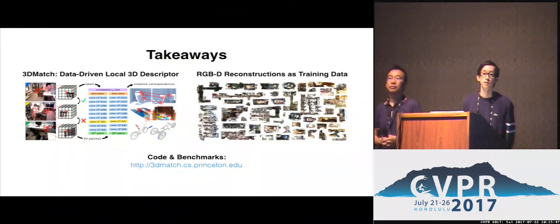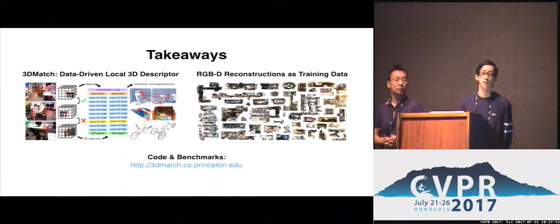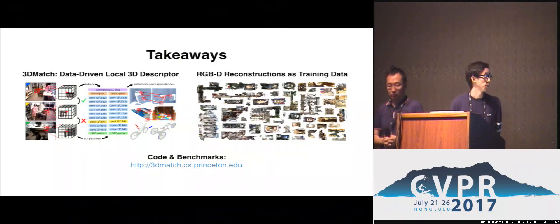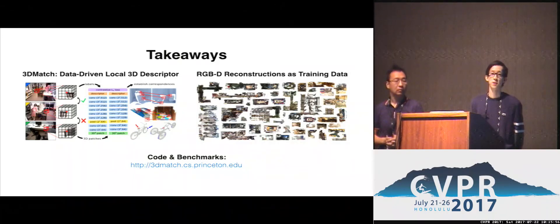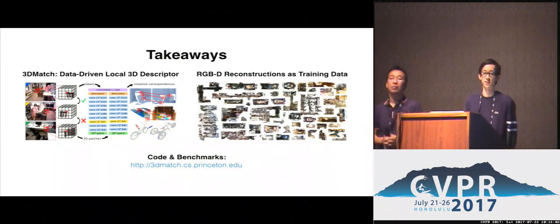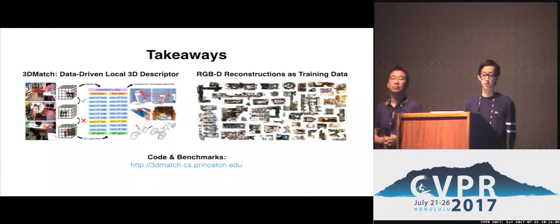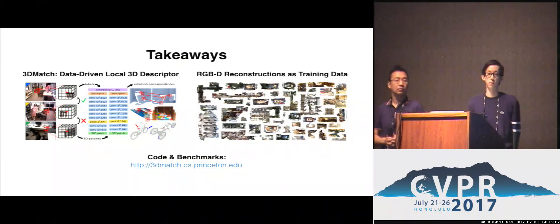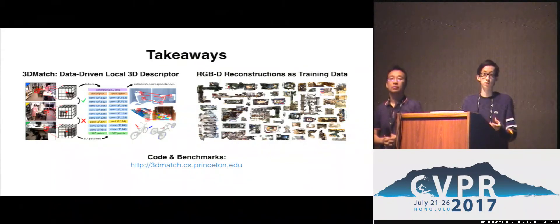Q: Did you do any systematic study of the mathematical invariance properties of your 3D descriptors with respect to transformations of the input? A: A lot of these experiments were more empirical than mathematical proof. We didn't have any proofs in the paper to prove this was the best solution. That's why we took an application-based approach to evaluate the usefulness of 3D Match.